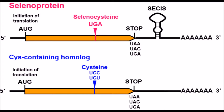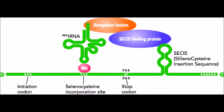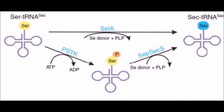In later experiments, it was determined that the insertion of selenocysteine, instead of stopping translation of the protein, is recognized by the fact that a loop structure exists on the 3' downstream untranslated region of the mRNA. This additional structure was named SECIS, or selenocysteine insertion sequence element.